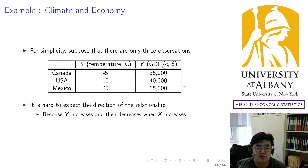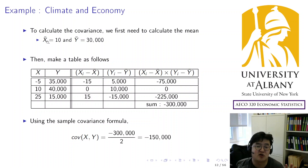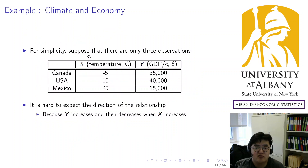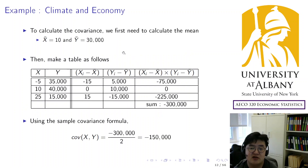So we have to numerically calculate which direction is dominating, and we will calculate the covariance. The first step is to calculate the mean — it is like variance, you need the mean to have the center. The mean of x is the average of these three numbers, which is simply 10. And the average of the y values is 30,000.